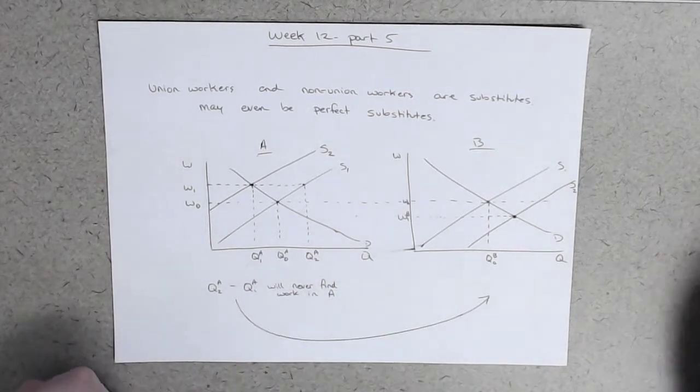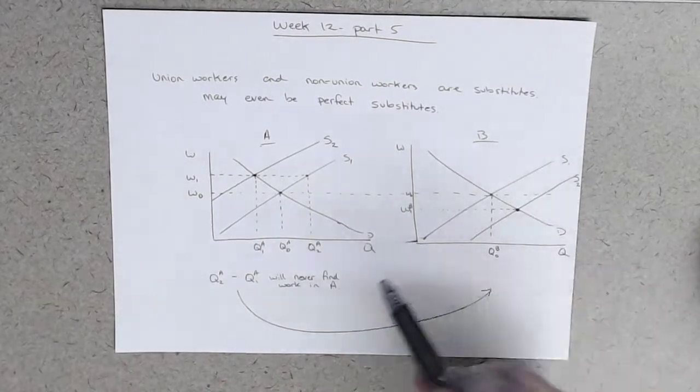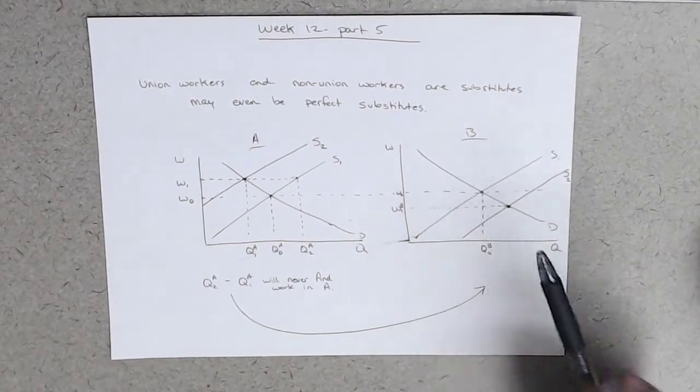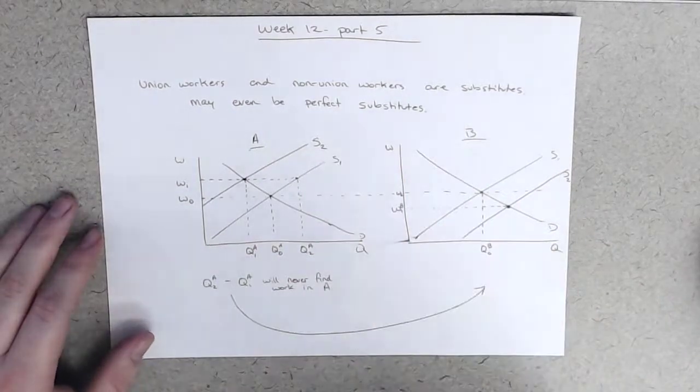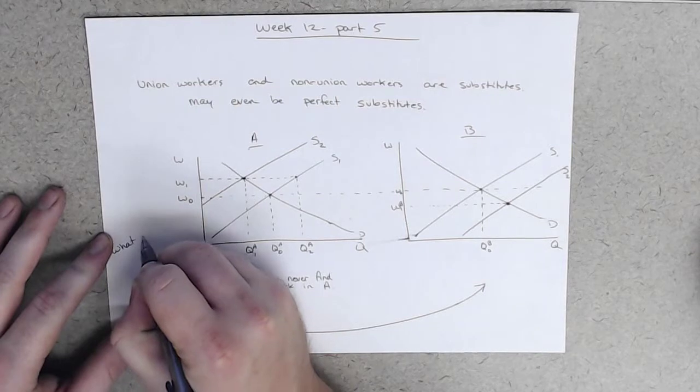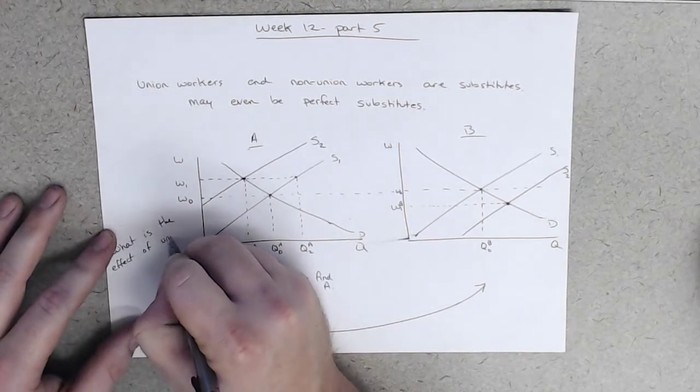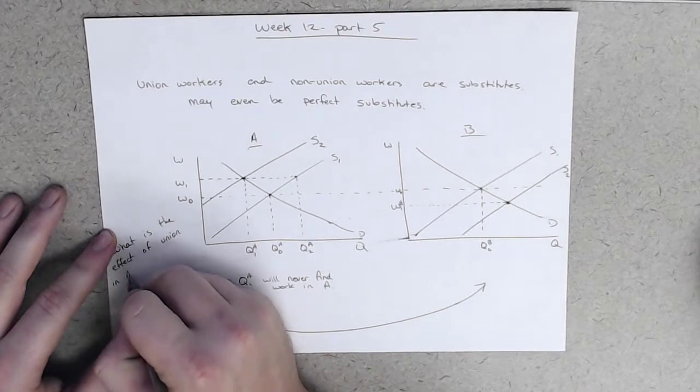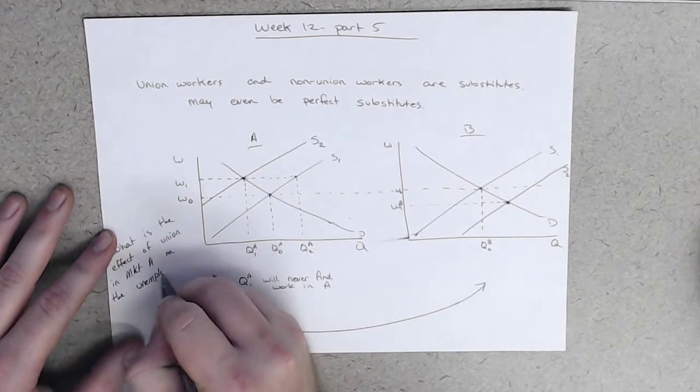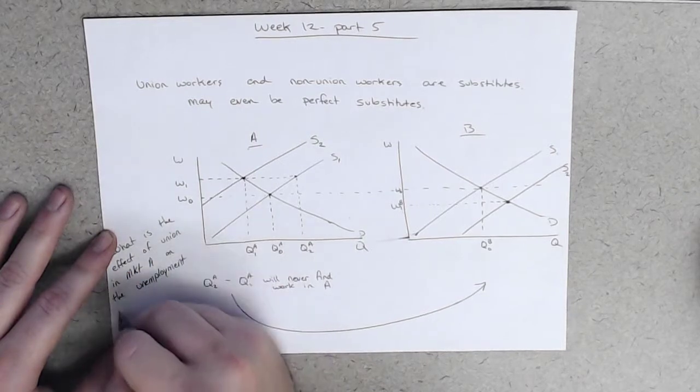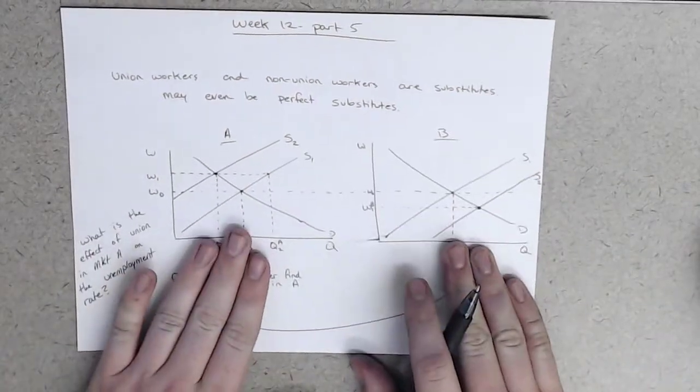And notice an interesting question, which maybe I'll ask on the exam, is what was the effect or what is the effect of union in market A on the unemployment rate. So assume that this is everything in the world. There's nothing else here whatsoever.